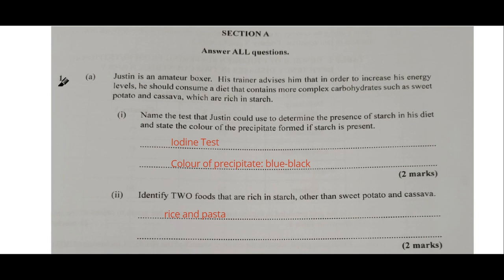Question 1A says Justin is an amateur boxer. His trainer advises him that in order to increase his energy levels, he should consume a diet that contains more complex carbohydrates, such as sweet potato and cassava, which are rich in starch. The first part asks to name the test Justin could use to determine the presence of starch in his diet and state the color of the precipitate if starch is present. The test would be the iodine test. The expected color change would be that brownish-yellow color of the iodine turning into a blue-black color, so the color of the precipitate would be blue-black.